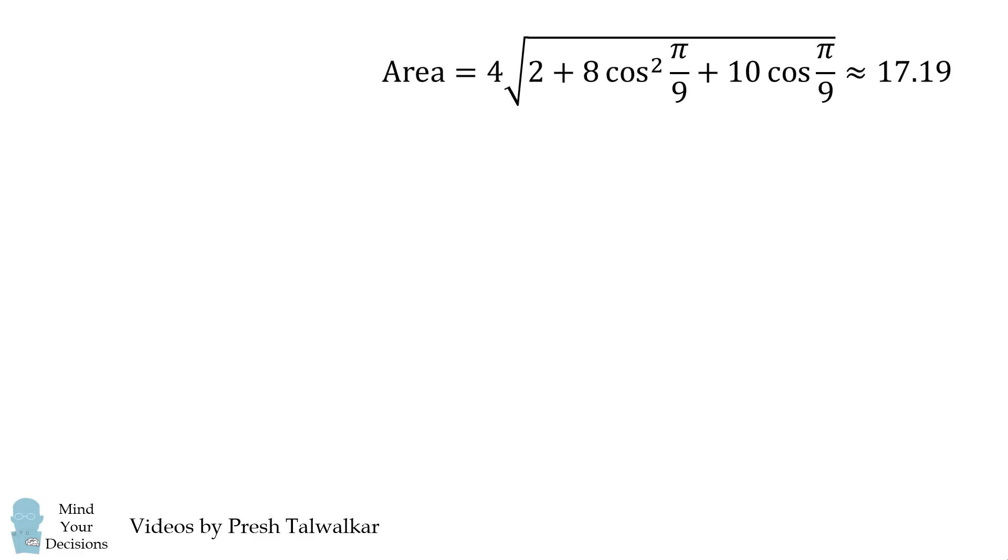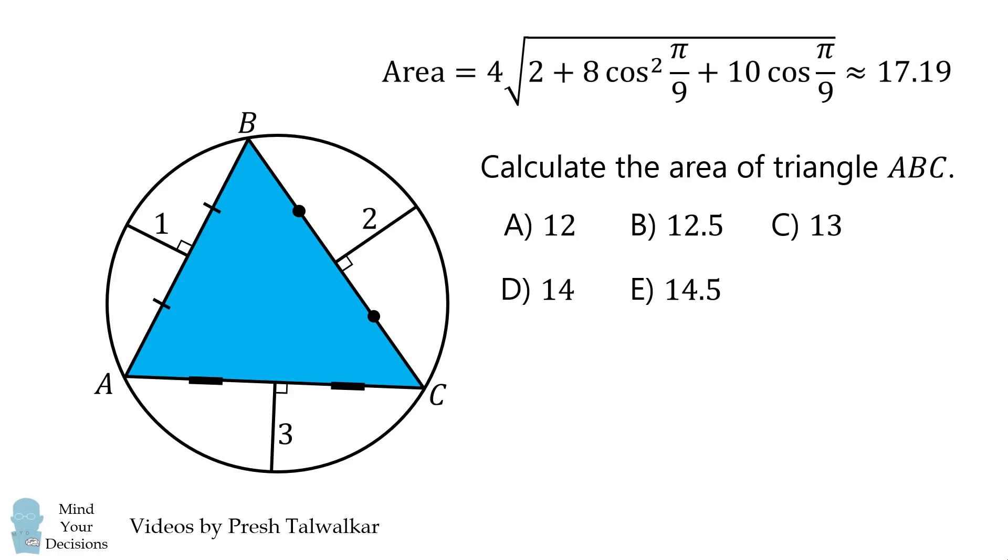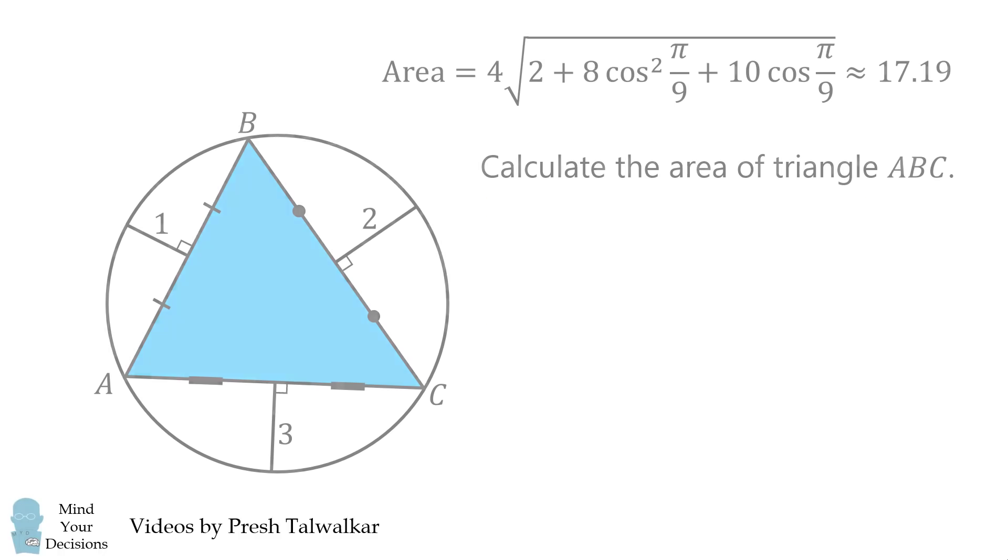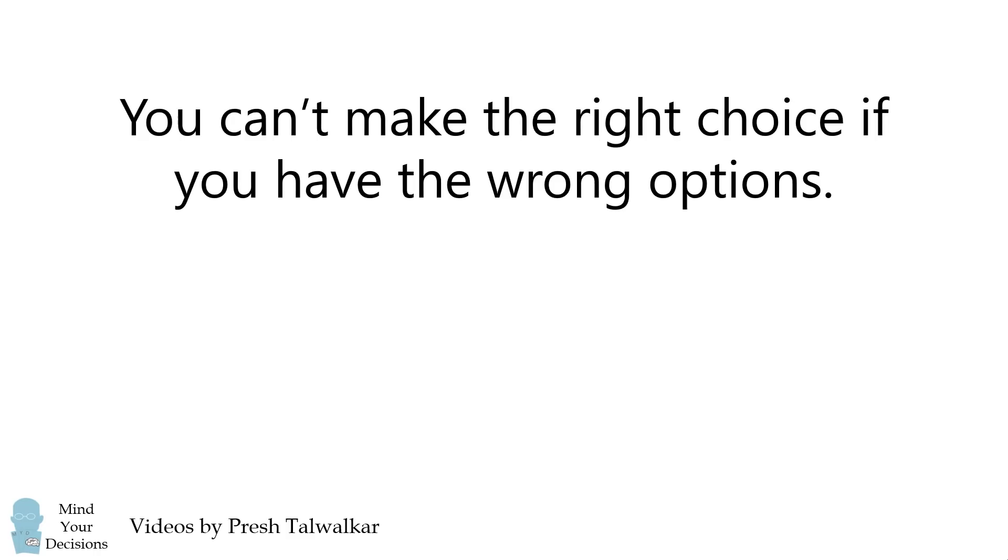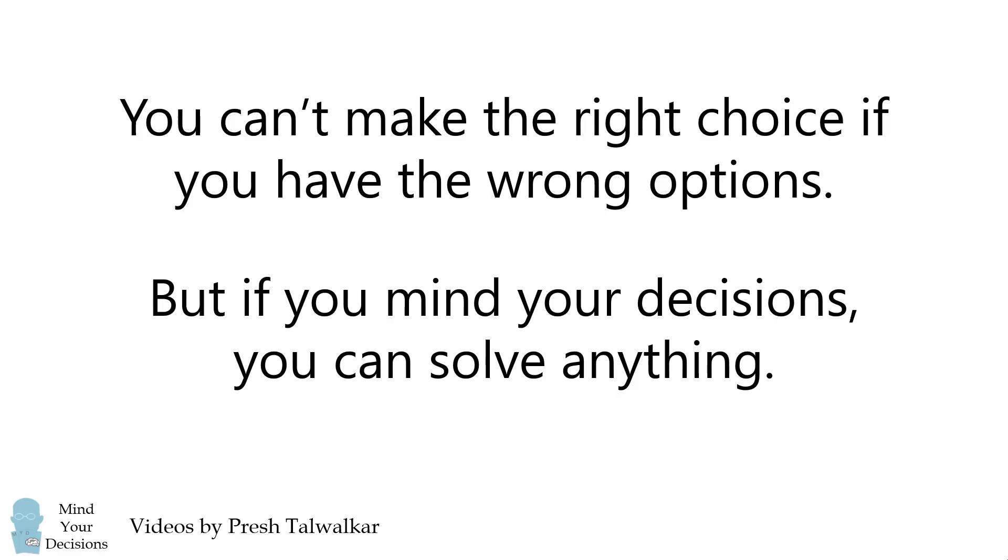Now if we go back to the original problem, we were given the following answer choices. It made the problem seem like it would be a simple problem, and there must be an easy way to solve it. But in fact, all of these answers are wrong. So I think this problem presents an important life lesson. You can't make the right choice if you have the wrong options. But if you mind your decisions, you can solve anything.